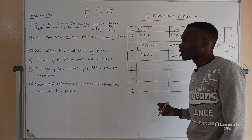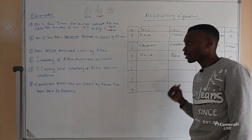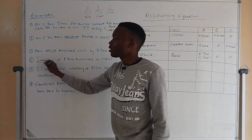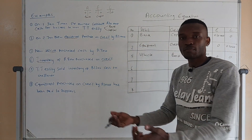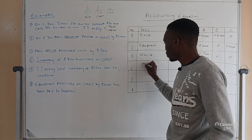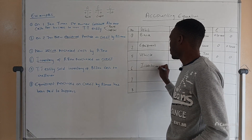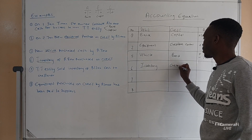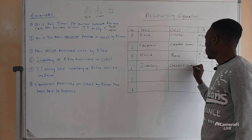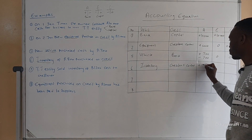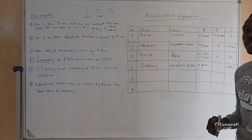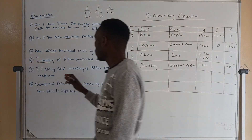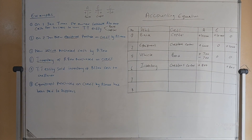Transaction on 6 January: inventory of eight hundred purchased on credit. Inventory is an asset, and credit means liability — creditors control. Our assets have increased because we purchased inventory — inventory comes inside our business. We debit inventory, and liability has increased, so we credit creditors control. The amount is eight hundred, recorded as plus eight hundred for assets and plus eight hundred for liability.